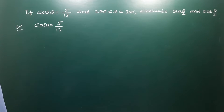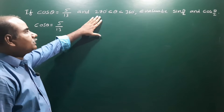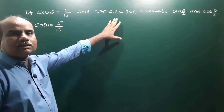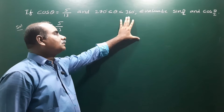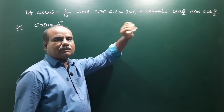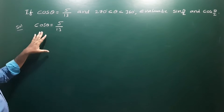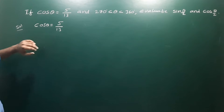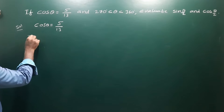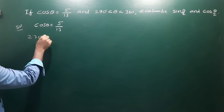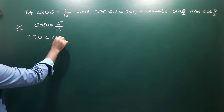If cos theta is equal to 5 by 13, and 270 less than theta less than 360, theta lies in this interval, evaluate sin theta by 2 and cos theta by 2. Given: cos theta is 5 by 13 and the angle theta lies between 270 and 360.